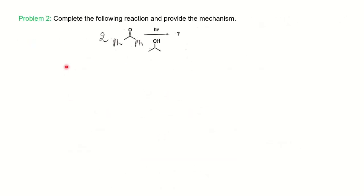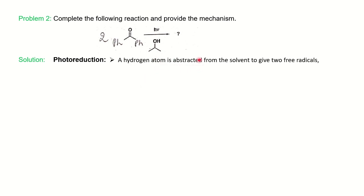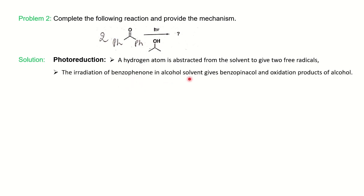The next category of question gives you a reaction and asks for the product with mechanism. Here we have benzophenone with isopropyl alcohol as solvent under photochemical conditions. Recalling that the reaction in the presence of isopropyl alcohol solvent is a photoreduction reaction — hydrogen will be abstracted from the solvent to give two free radicals. The products obtained are benzophenacol and acetone, the oxidation product of the alcohol.